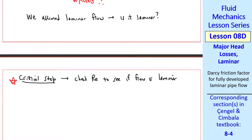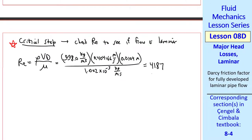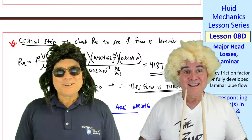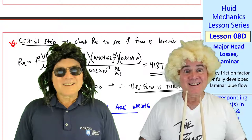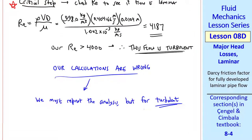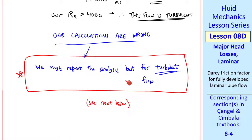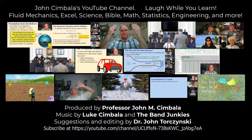Reynolds number is rho VD over mu. So we plug in rho V, D, and mu, and we get 4187. Our Reynolds number is greater than 4000. Therefore this flow is turbulent, so our calculations are wrong. Bummer, dude. You did it wrong on purpose, didn't you Professor Cimbala? Yes, because you'll learn more this way. What do we do? We must repeat the analysis, but for turbulent flow. We'll do this in the next lesson, where I'll show you equations for F, the Darcy friction factor, for turbulent pipe flow. Thank you for watching this video. Please subscribe to my YouTube channel for more videos.